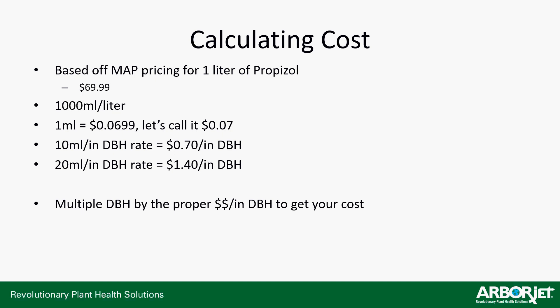How do you get those costs? Propyzole is $69.99 per liter. So a liter is about 7 cents per milliliter. At the 10 mill rate, you're looking at 70 cents per inch. At the 20 mill rate, that's $1.40 per inch. You simply take whatever rate you're going to use — high rate or low rate — and multiply that cost by your diameter to get your cost of product for that tree.